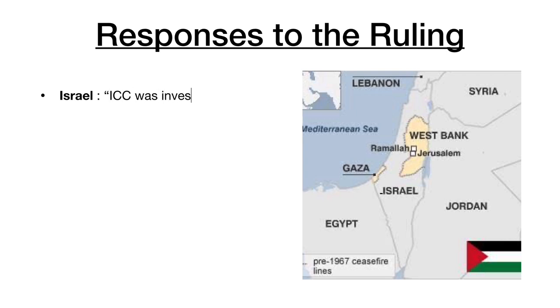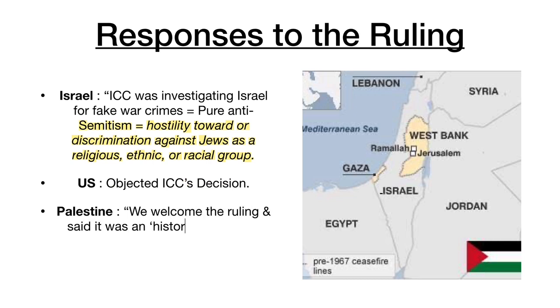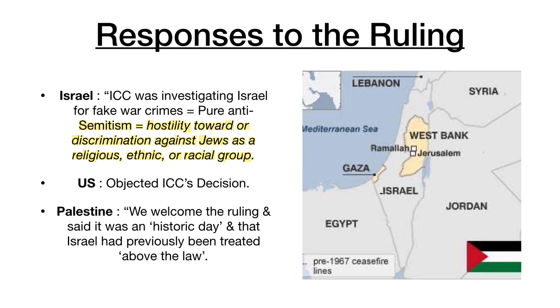In 1967, the Arab countries again refused to recognize Israel as a state, leading to another war known as the Six Day War. Israel won again and occupied even more — the West Bank, Gaza Strip, East Jerusalem, Syrian Golan Heights, and Egypt's Sinai Peninsula. On the ICC ruling, Israel said the ICC was investigating Israel for fake war crimes — acting as pure anti-Semitism, meaning hostility or discrimination against Jews. The United States also objected, while Palestine welcomed the ruling.